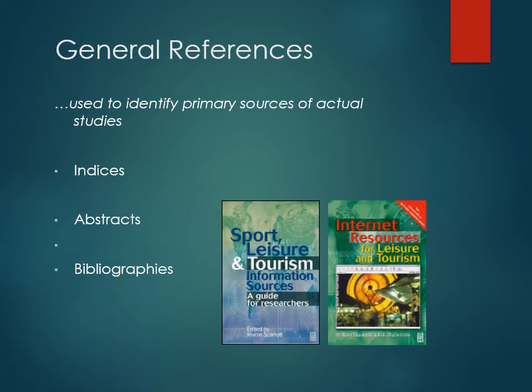From there you can come up with general references that you can pull from these sources. General references are used to identify primary sources of actual studies. So you'll move from the general sources to the general references, and from there you can go to the bibliographies, the abstracts, the indices, and pull up specific studies or specific sources that may help you.